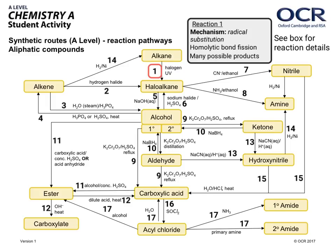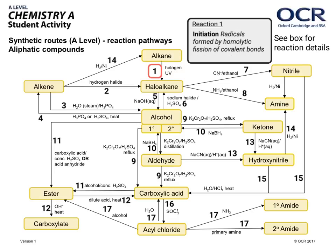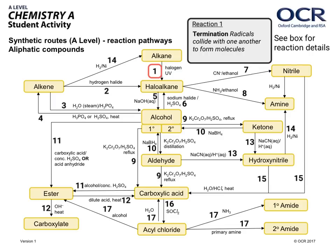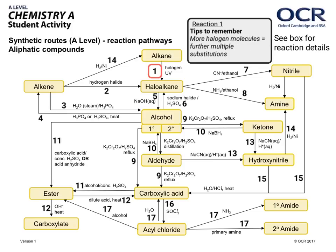The first thing to consider is it's a radical substitution mechanism. There's homolytic bond fission going on in the halogen, and many possible products can be formed. Because the reaction is hard to control, it's not very good for synthesis. The first step is initiation, where radicals are formed from homolytic fission of covalent bonds. In propagation, radicals react with molecules to make new radicals and molecules — HCl or HBr is often made at this stage. In termination, radicals collide with one another to form molecules. There are many possible propagation and termination steps, and more halogen molecules lead to further multiple substitutions.